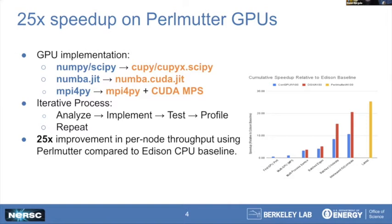At the end of this work so far, we've seen a 25x improvement in the per-node throughput of data, which is the figure of merit DESI uses to track progress, using the A100 GPUs on the Perlmutter GPU nodes compared to an Edison CPU baseline.